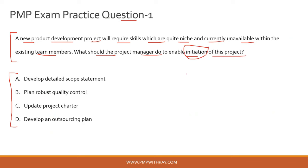Let's look at the options one by one. Option A: develop a detailed scope statement. Does the scope statement happen in the initiation stage or in the planning stage? It happens in the planning stage, so this is outrightly incorrect. Option B: plan robust quality control. Quality control happens in the execution stage, not in the initiation stage — hence this is also an incorrect option.